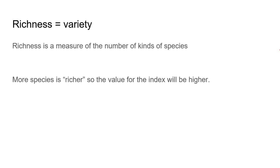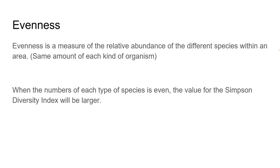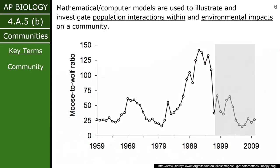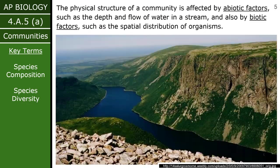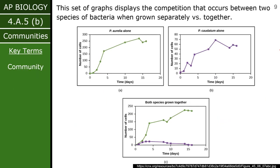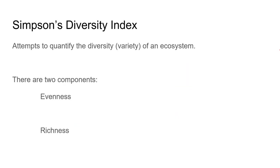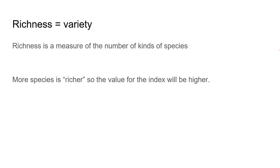Richness is a way for us to measure variety — basically just how many species are there. This is akin to what we were talking about with species composition. So species diversity gets at evenness, and species composition gets at the richness.